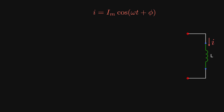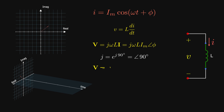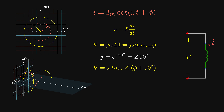For the inductor, if the current passing through it is sinusoidal, the voltage across it is L di/dt. Transforming voltage and current to phasor form using the phasor derivative property, v equals j omega L i. Since j is nothing more than a 90-degree phase shift, for the case of inductors, the voltage leads the current by 90 degrees. Unlike resistors, voltage and current in the inductor are 90 degrees out of phase.